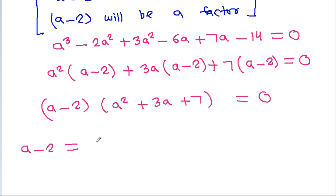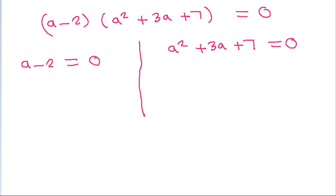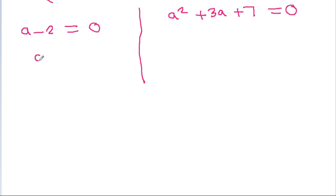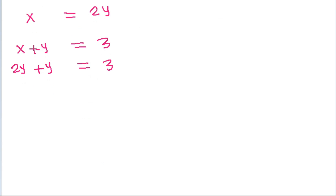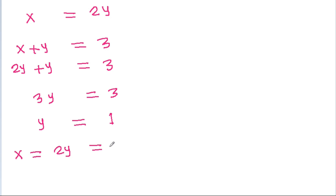So either a - 2 = 0 or a² + 3a + 7 = 0. From the first factor, a = 2, and since a = x/y = 2, we get x = 2y. We have been given x + y = 3, so 2y + y = 3, giving 3y = 3, so y = 1 and x = 2y = 2.